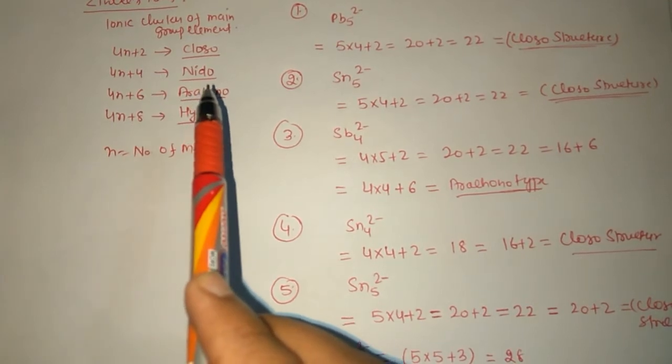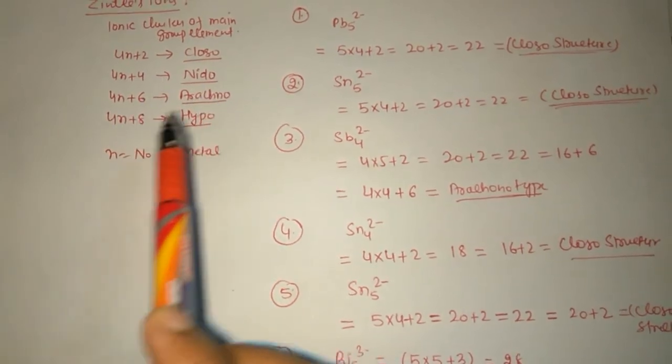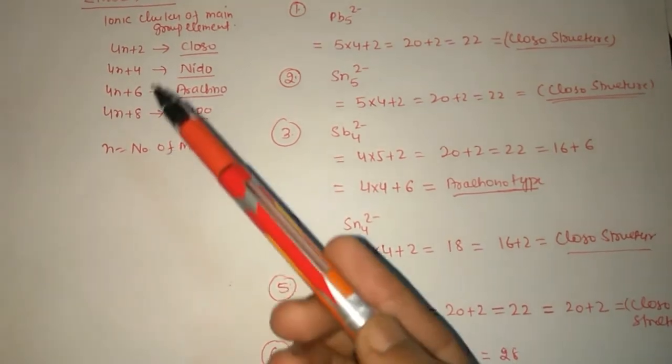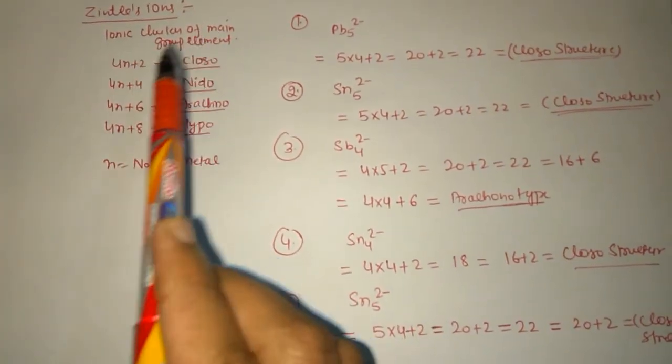4n+6, then it is arachno; 4n+8, then it is hypo, where n is equal to the number of metal ions. Basically, zintl ions are ionic clusters of main group elements.